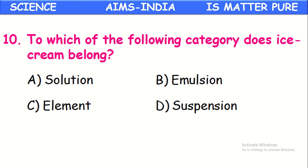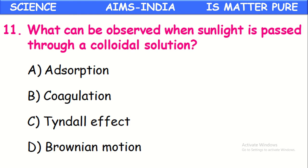To which category does ice cream belong? Ice cream comes under an emulsion. Next, what can be observed when sunlight is passed through a colloidal solution? A colloidal solution contains small particles of solid dispersed in liquid. When light is passed through it, these solid particles scatter the light — that is called the Tyndall effect. So Tyndall effect is observed when sunlight is passed onto colloidal solutions.